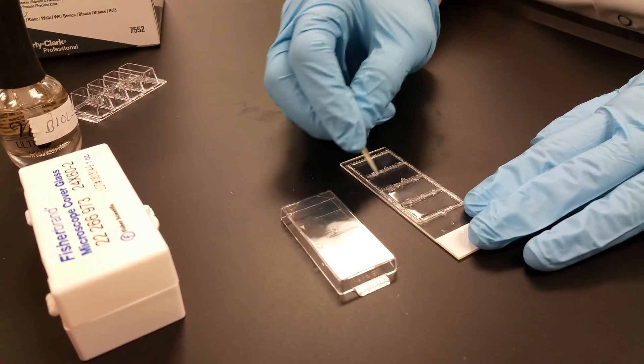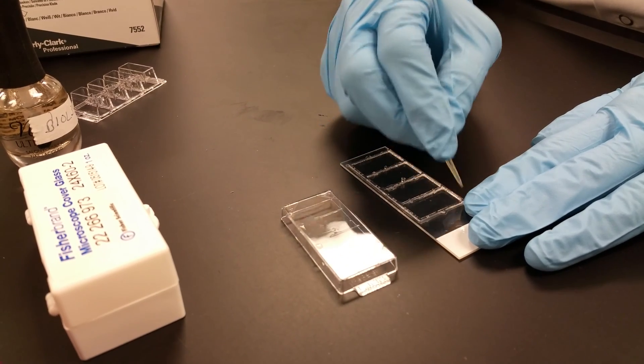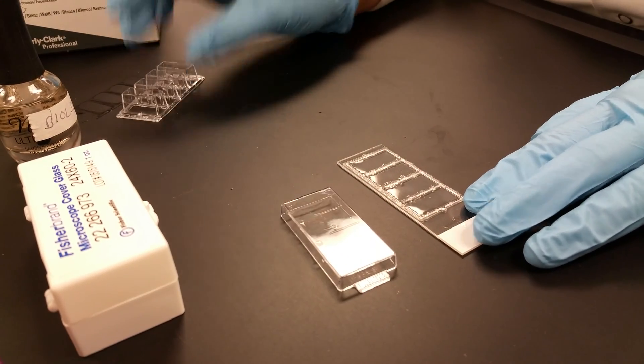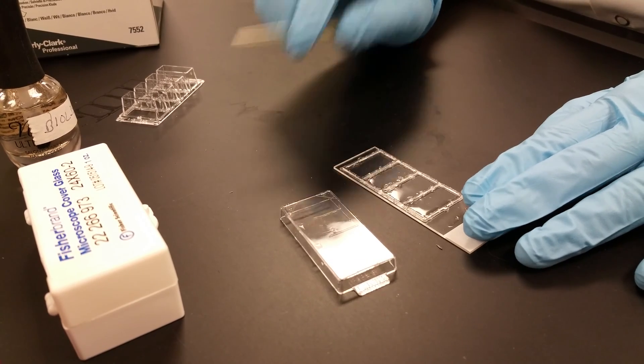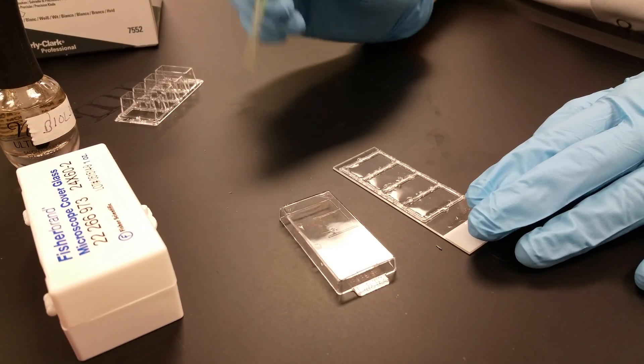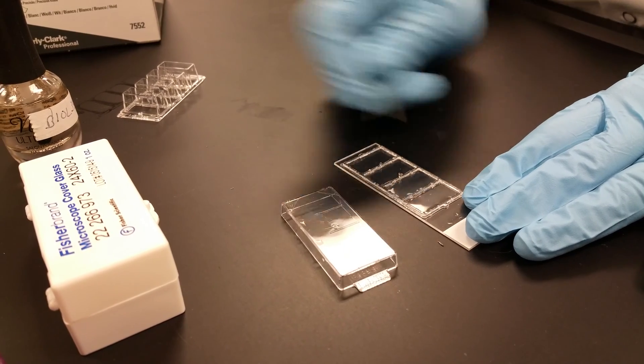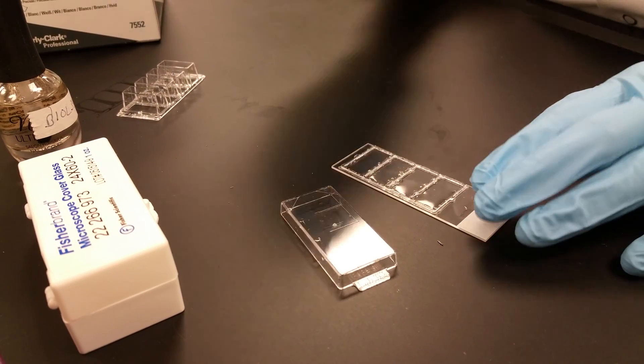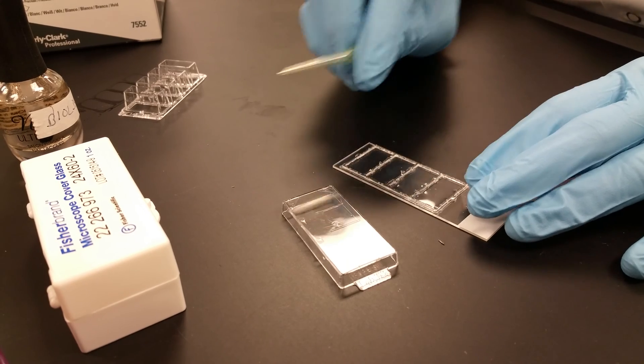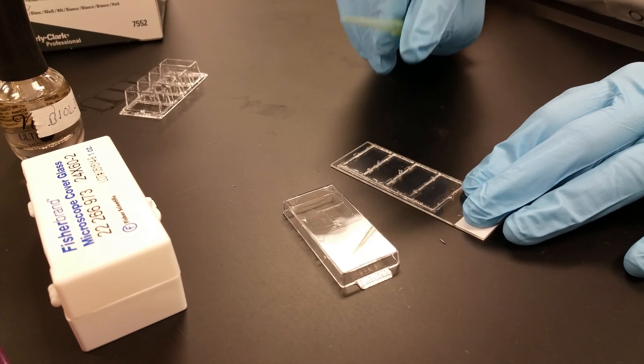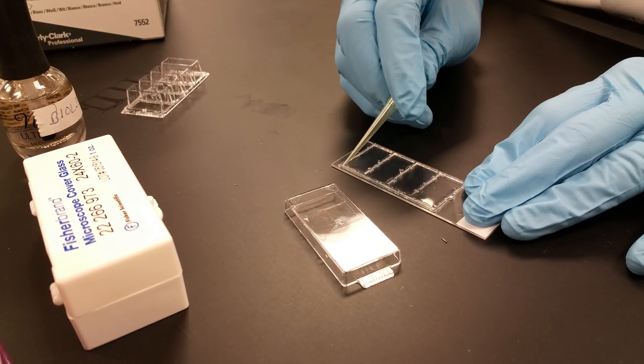Before you can mount the coverslip, you need to get rid of this glue that was holding on the plastic chamber. There are a number of ways you can do this. At your bench, you're going to have some razor blades. One option is to cut the glue and remove it with tweezers. Another way you can do it is like this: if you take a yellow pipette tip and aim it towards one of the corners, that will help you pick up part of the glue.